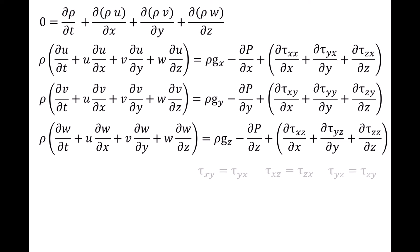We also noted that the viscous shear stresses are symmetric for small fluid elements. Currently, we have four conservation equations but 11 unknowns: the three velocity components u, v, and w, the density rho, pressure p, and six viscous stresses. We have too many unknowns, so we must make some assumptions about the flow in order to reduce the number of unknowns.